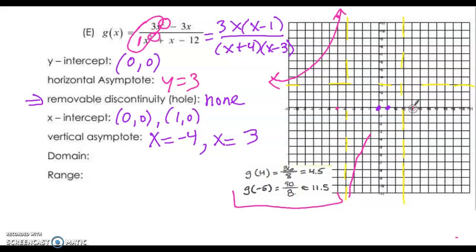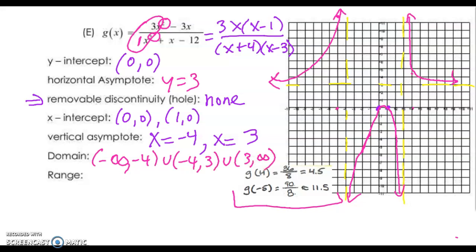If I plug in x equals 4, I get about 4.5, which is up here — so the graph is in that region. Since the multiplicity at x equals 3 is also one, the graph just turns around at some point and we don't really need to know the exact value. The domain is negative infinity to negative 4, union with negative 4 to 3, union with 3 to infinity. The range is negative infinity up to the local max, which you can find with your calculator using second calc maximum — that gives about 0.52 — so negative infinity to 0.52 with a hard bracket, union with 3 to infinity.